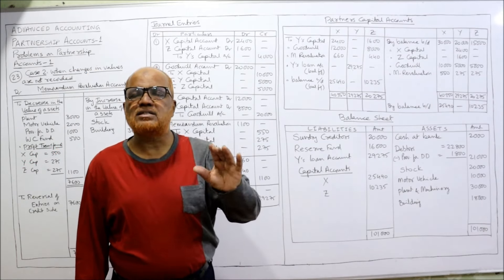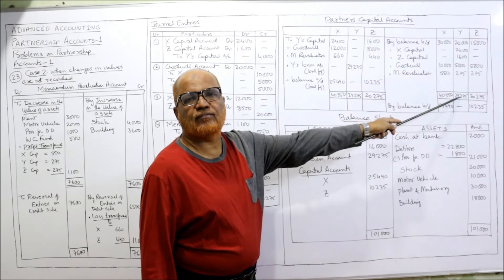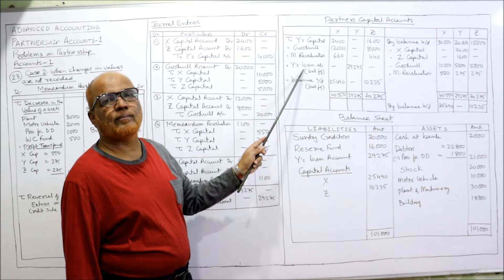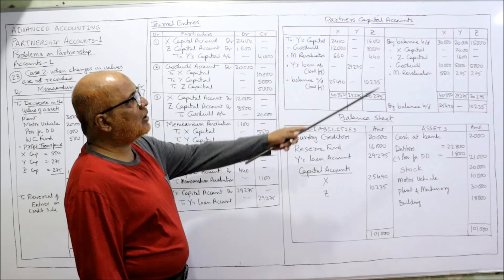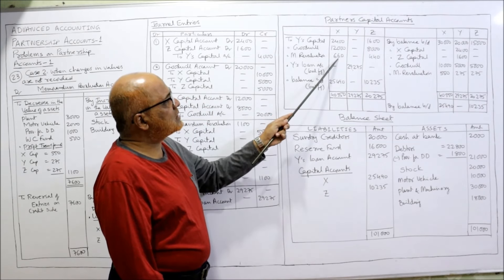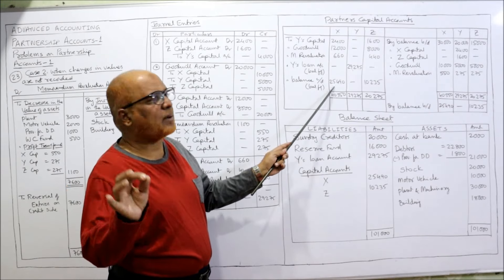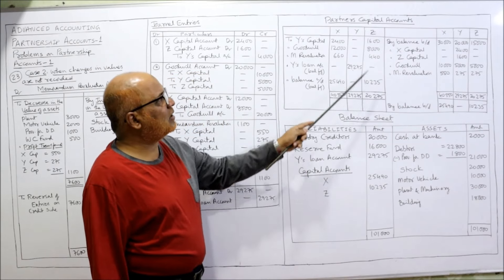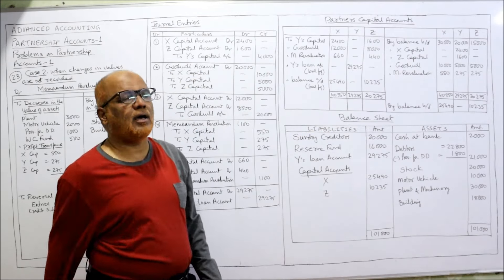Y's capital account credit side total = 29,275, transferred to Y's loan account. X's capital account: credit total = 40,550 minus debits 2,400 + 12,000 + 660 = 15,060; closing balance = 25,490. Z's capital account: credit total = 20,275 minus debits 1,600 + 8,000 + 440 = 10,040; closing balance = 10,235. These are the capital account balances after all adjustments.